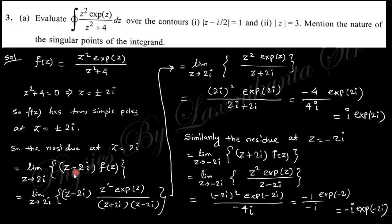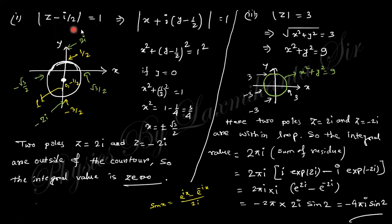The residue at z = 2i is obtained using the limit formula: lim(z→2i) (z − 2i)·f(z). Writing z² + 4 in factored form, the terms cancel and you obtain the residue as i·e^(2i). Similarly, the residue at z = −2i is −i·e^(−2i). Now consider the contour condition, which gives a circle with center (0, −1) and radius 1, with maximum y-value of 1/2, minimum −3/2, and x-extents ±√3/2.